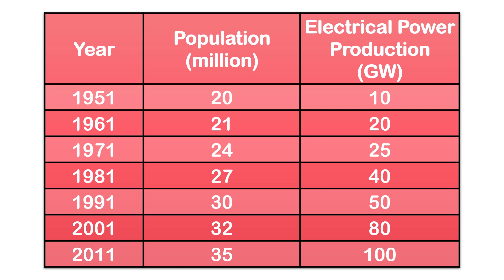This is the table that is given. They have given us 7 years, each a decade apart, and the population for each decade in millions, and the electrical power production in gigawatts.